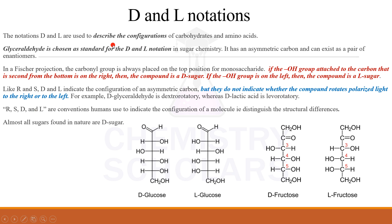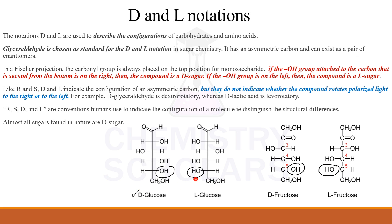To summarize: D and L are used to describe the configurations and to distinguish the structural differences. They have nothing to do with dextrorotatory or levorotatory — they are completely different. Very importantly, when the OH group is attached to the second carbon from the bottom — that specific carbon — if OH is on the right hand side it is the D series, if on the left hand side it is the L series. Almost all the sugars obtained in nature are D sugars; they are available in abundance.